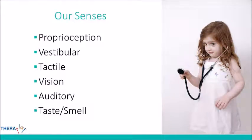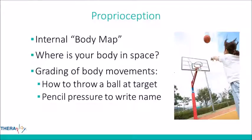I'll be going over different senses as well as some red flags. The first one is proprioception — our muscle and joint awareness. We take in information from our joints and muscles, and that gives us an internal body map so we know how our body parts relate to one another. It tells us where our body is in space. If you were to close your eyes right now, you would know exactly how you're sitting, if your legs are crossed, if you're leaning on a table.